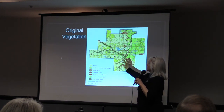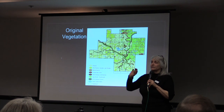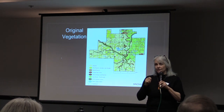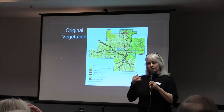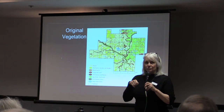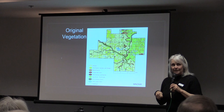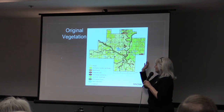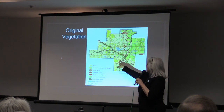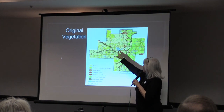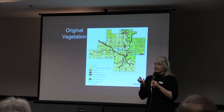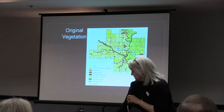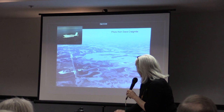This is the original vegetation map of the area, created by looking at land surveyors' witness trees along the border sections and notations of vegetation. Everything that is dark yellow or blue was water on the landscape — so probably 30% of the area was some kind of wetland.